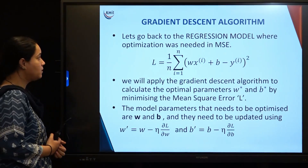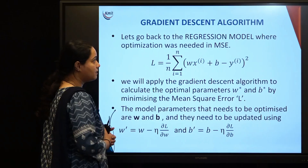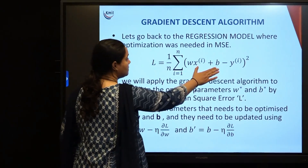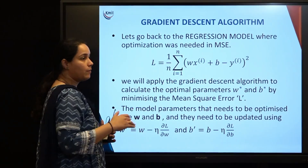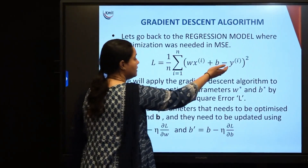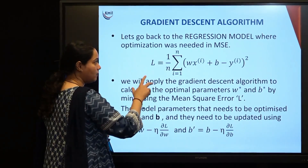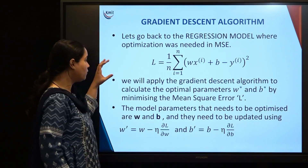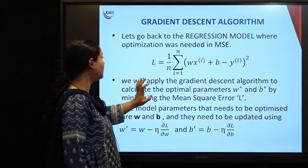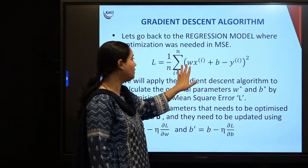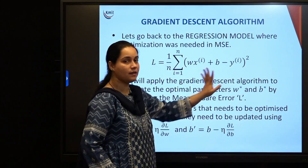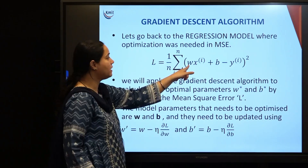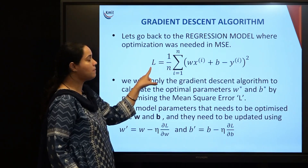Let us go back to our regression model where optimization was needed in the mean square error loss function. The predicted output is w*x + b, and y is the actual output. The squared error averaged gives us the loss function L using mean square error. The parameters that need to be updated are w and b; x and y are already known values.